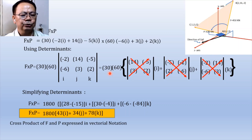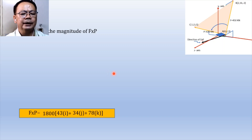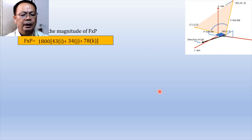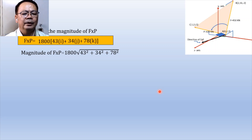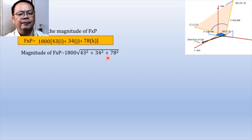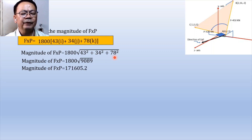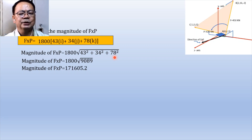To compute the magnitude of the cross product F cross P, we have: |F cross P| = 1800 times the square root of 43² + 34² + 78², which equals 1800 times the square root of 9089. When simplified, this gives us a value of 171,605.2 kN.